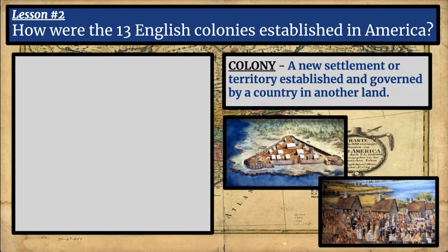First of all, let's review the term colony. A colony is a new settlement or territory established and governed by a country in another land. We're going to be studying two different colonies that were established by the English in the Americas that eventually became what we would call the 13 colonies.